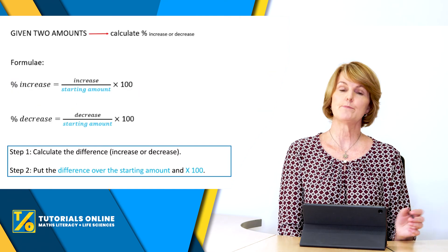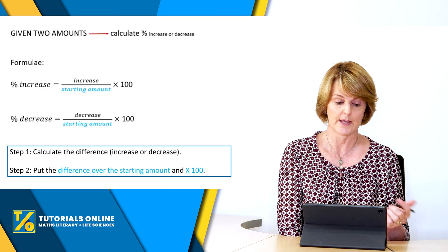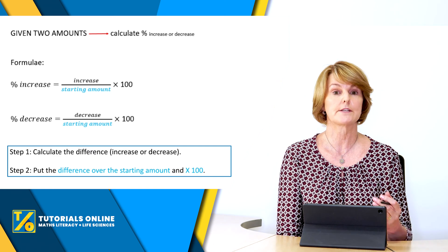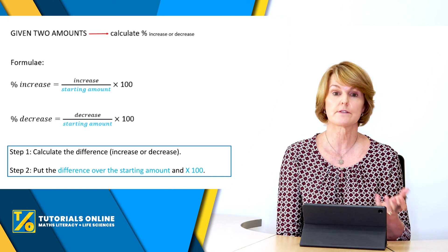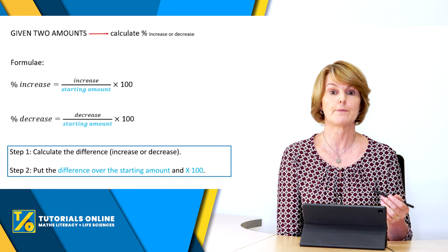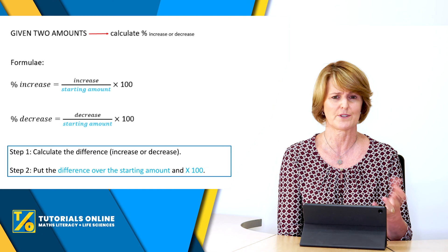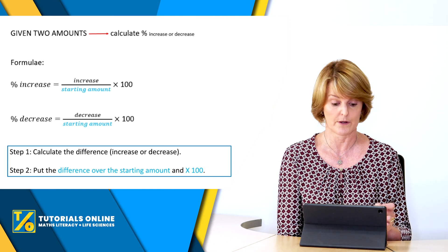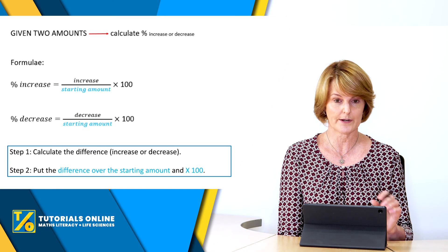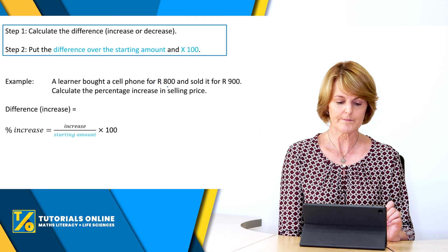Now let's look at questions where you're given two amounts and have to calculate the percentage increase or decrease. The formula for percentage increase is: the difference over the starting amount times 100. Percentage decrease uses the same formula. The key point people get wrong is identifying the starting amount — that's the initial amount. First, calculate the difference by subtracting the two values, then divide by the starting amount and multiply by 100.